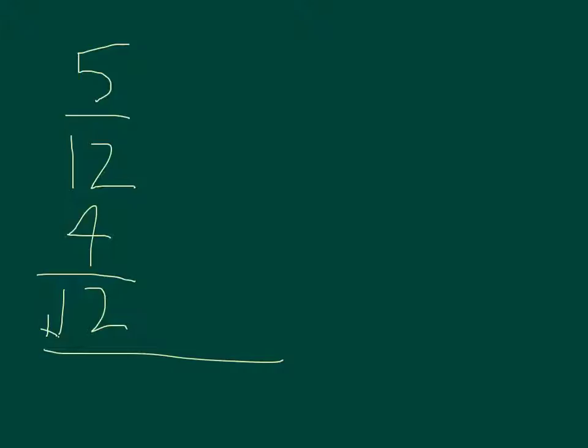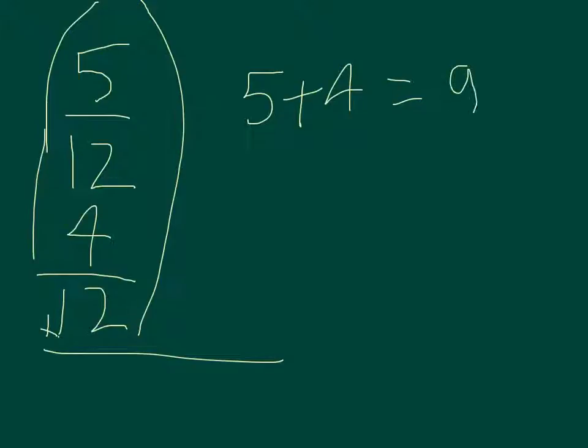So for 5 twelfths plus 4 twelfths, you're going to need to line it up like I did. And then after you've done that, you're going to need to figure out what 5 plus 4 equals. And 5 plus 4 equals 9. So your answer is going to be 9 twelfths.